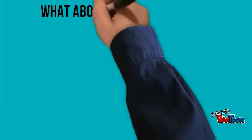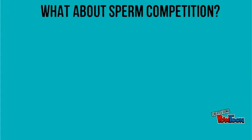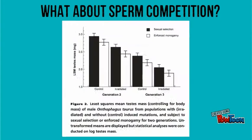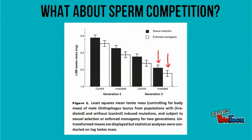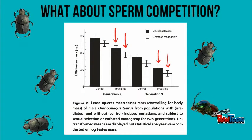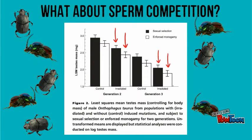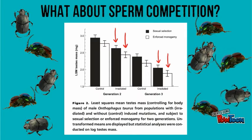Although populations subjected to sexual selection tended to have larger testes, as indicated in Figure 2, this difference was not statistically significant, and sexual selection had no significant impact on removing mutations that reduced testes mass. Further experimentation with more filial generations of sexual selection may be needed for increased statistical support.